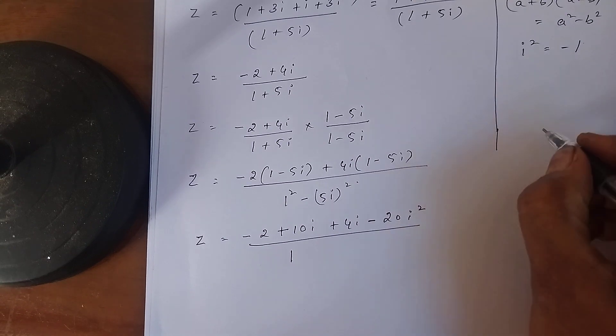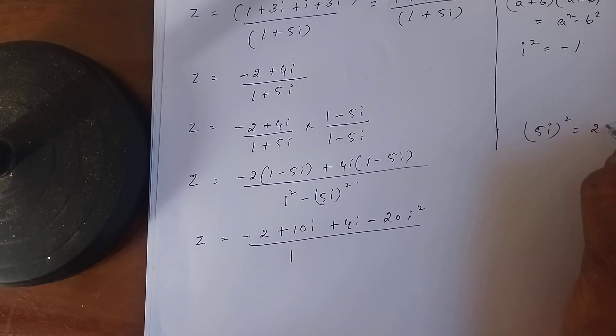With this here, what we will get: (5i)² means 5² is 25, i² is i². So 25i² means -1, so you will substitute, you will get -25.